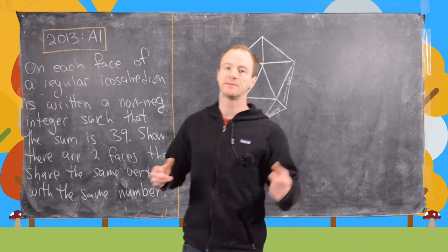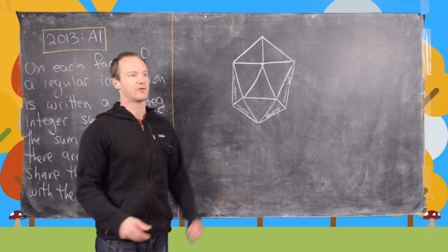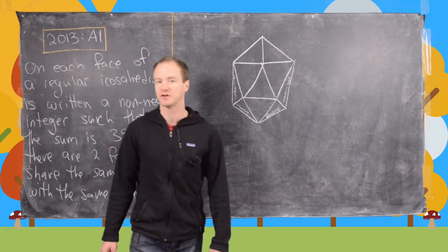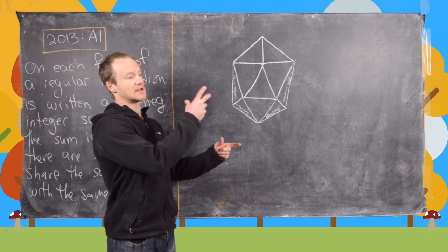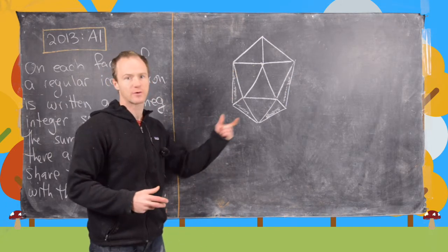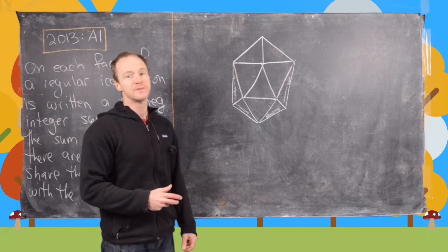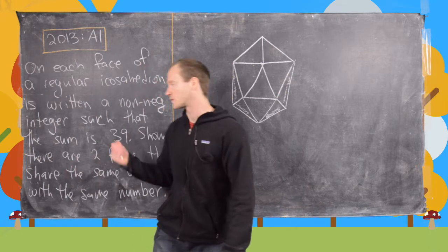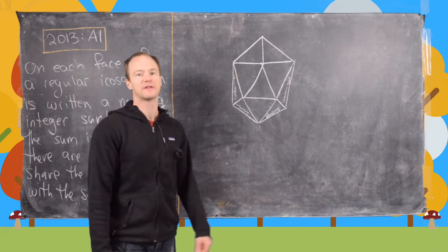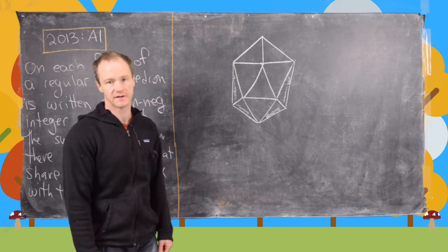And so this may seem like it comes out of nowhere and maybe not everyone knows what a regular icosahedron looks like, but every page of the Putnam exam has an icosahedron at the top left or right. So that gives you some sort of idea for why this is a reasonable question because you can look at the icosahedron while you're working on this problem.